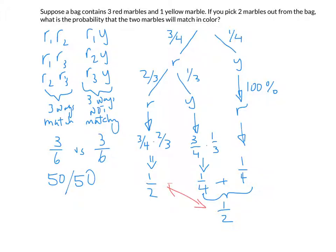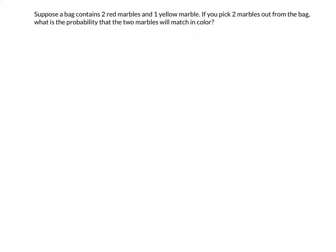Now let's look at some variations with different numbers of marbles. We have a bag containing two red marbles and one yellow marble. What's the probability that you'll get the two red marbles? There is only one way to get two red marbles if you ignore order, so let's look at the probability tree.